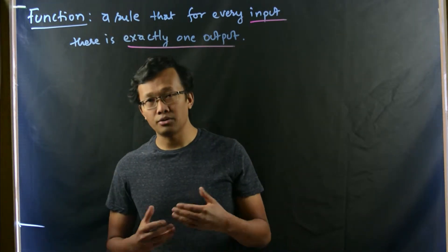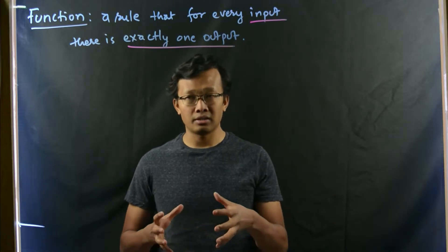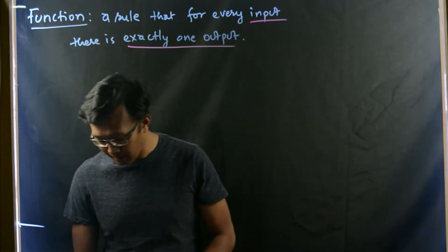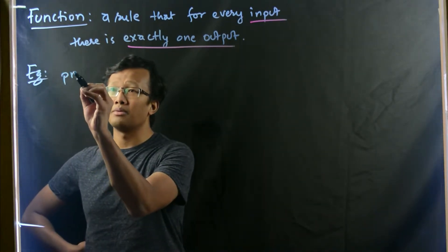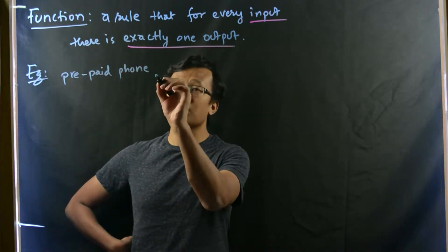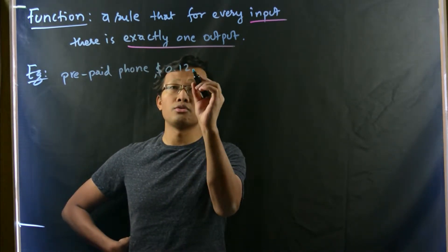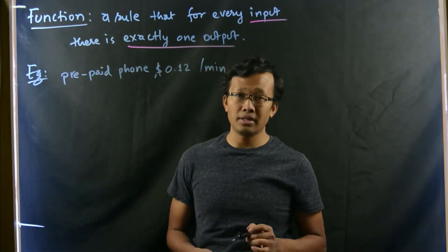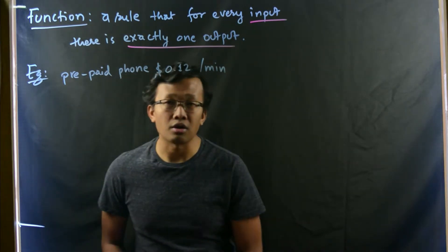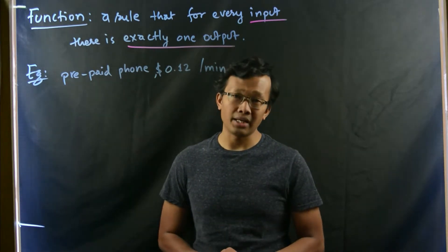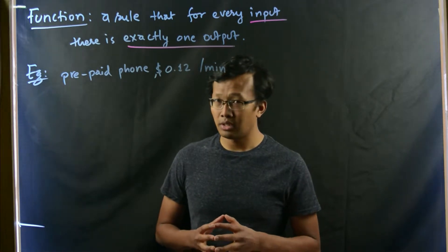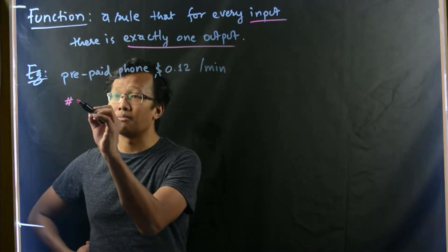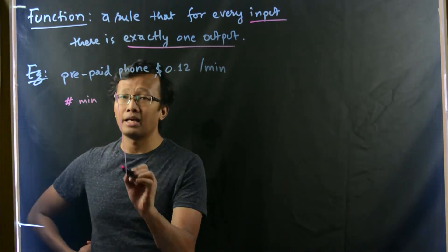Let us talk about an example and how to represent a simple real-life situation into a function. Suppose you want a prepaid mobile, prepaid phone, which costs $0.12 per minute for a call. Then, what is the total cost that you will pay for the services of the phone? Let us consider this is number of minutes and the total cost.